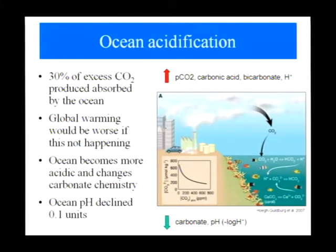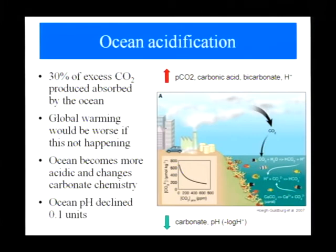Here we have the equations. Simply put: CO2 levels in the ocean are going up, dissolved CO2 levels go up, carbonic acid goes up, bicarbonate levels are going up, hydrogen ions go up with acidification, carbonate ions go down, pH goes down — and we measure that as minus log of hydrogen ions. So that's basically what's going on.